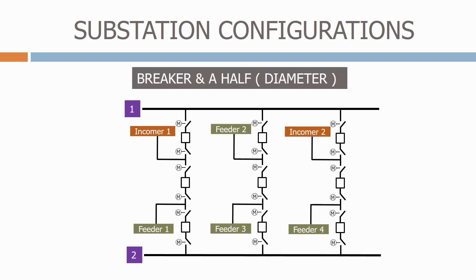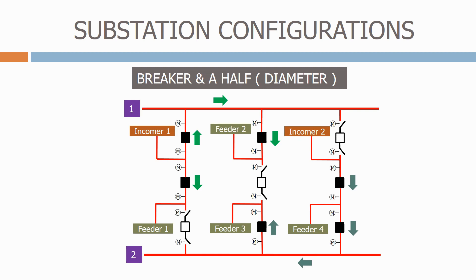Another popular arrangement for switching stations is a breaker-and-a-half arrangement, sometimes called a diameter. In this arrangement we have two common bus bars connected together with bays that have three circuit breakers each. The bays can have an incomer and feeder, or alternatively two feeders. This configuration is quite common for transmission level switching stations where power is simply flowing in and out of the station with no transformers. We can connect any incomer to any feeder via any bus bar, so the arrangement is very flexible. In normal operation power flows from each incomer onto its bus bar and out to the feeders connected to it. If we lose the supply to incomer 1, the arrangement is automatically reconfigured with incomer 2 now feeding both bus bars and all of the loads connected to them.